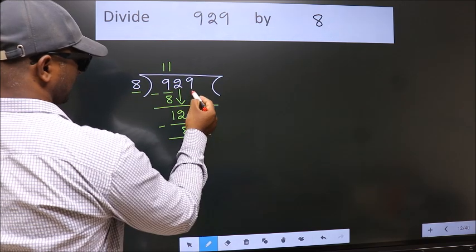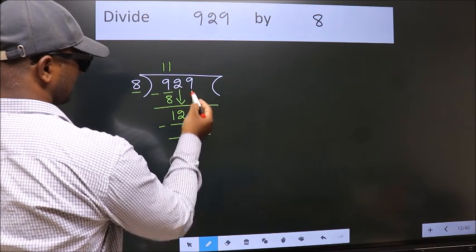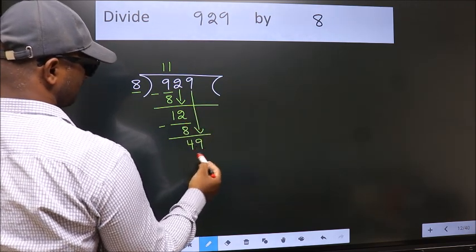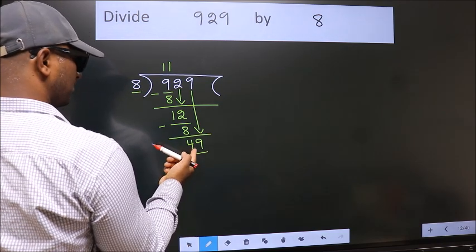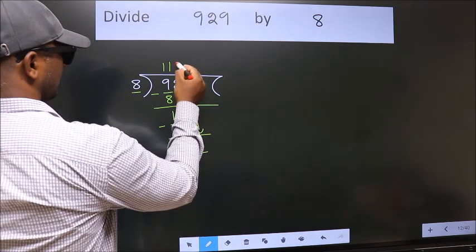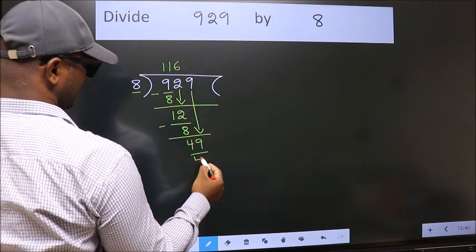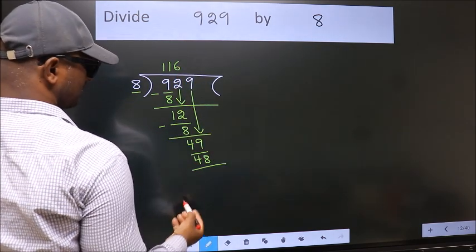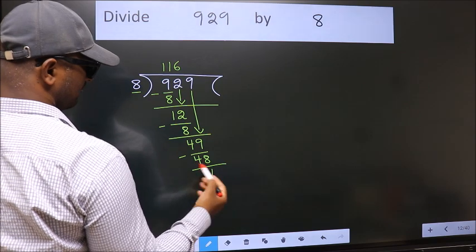After this, bring down the beside number. So 9 down. So 49. A number close to 49 in 8 table is 8 6 48. Now we subtract. We get 1.